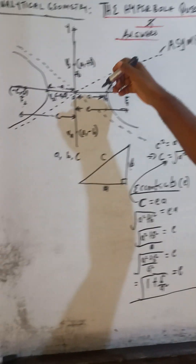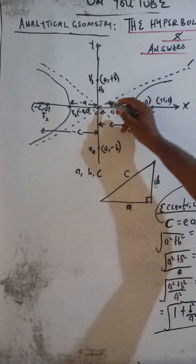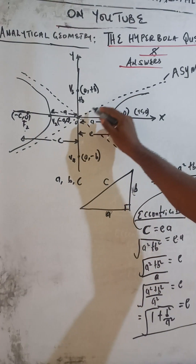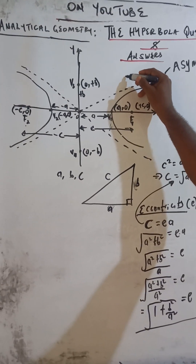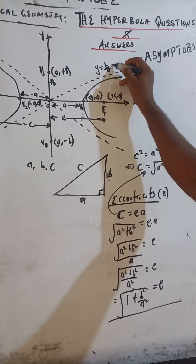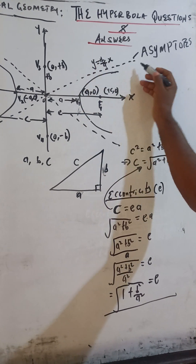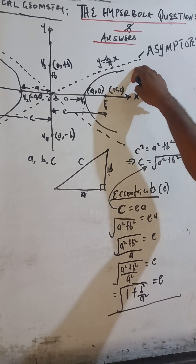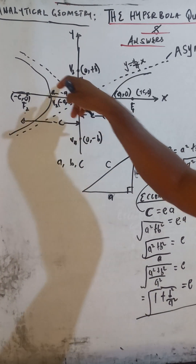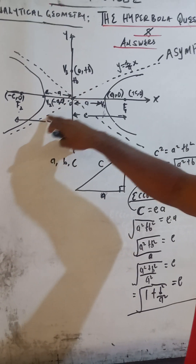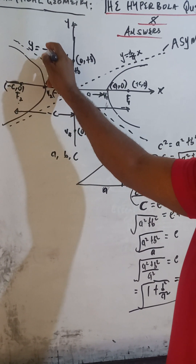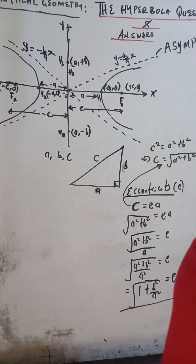If you are asked to find the equation of the asymptote, for the asymptote with positive gradient, the equation is Y equals B over A times X. So the gradient is plus B over A. The equation of the asymptote with negative gradient is a mirror image: Y equals minus B over A times X.